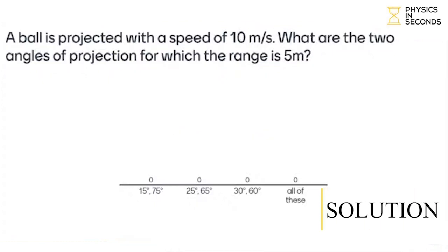The question was simple. A ball is projected with a speed of 10 meters per second. What are the two angles of projection for which range is 5 meters? Which angles are two angles for which range is 5 meters?